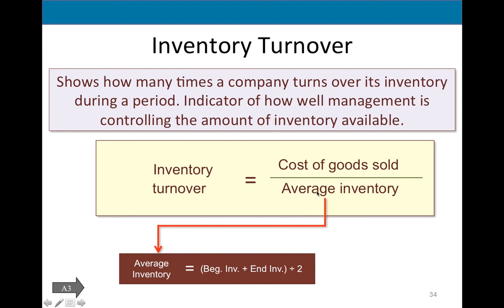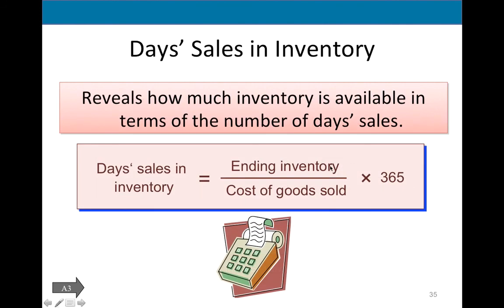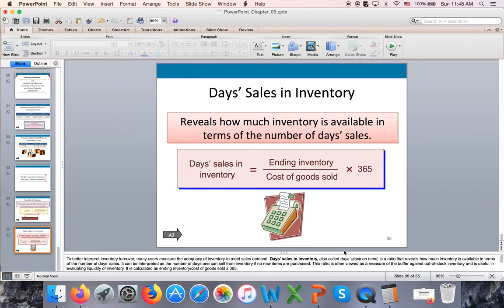The inventory turnover formula is COGS divided by average inventory. To calculate average inventory, take last year's ending inventory plus this year's ending inventory divided by two, then plug it in. This formula combines the income statement and the balance sheet. For days of sales in inventory, it's essentially flipped: take current period inventory divided by COGS, multiplied by 365 days. This concludes Chapter 5.